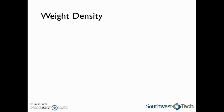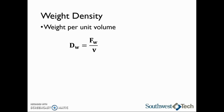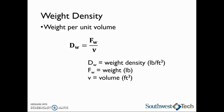The other way we can calculate density is a weight density. Typically when we are using a weight density, we have English or standard units. The weight density is a weight per unit volume. To calculate the weight density d sub w, you will take the weight force f sub w and divide that by the volume. The units for weight density will be pounds per cubic foot.